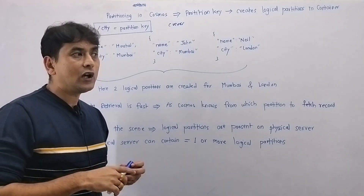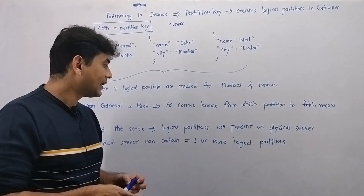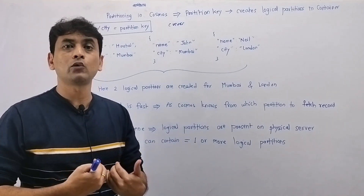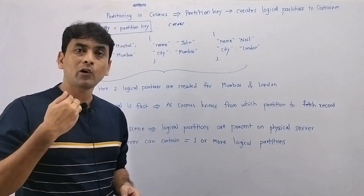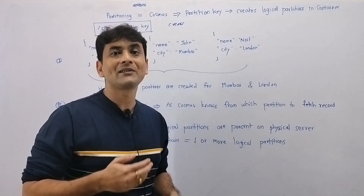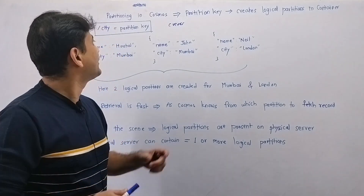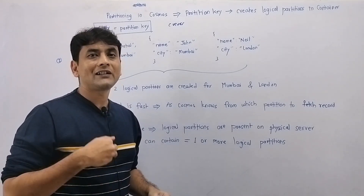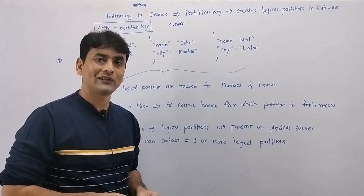Because we have physical servers behind the scenes for our logical partitions, we can horizontally scale our Azure Cosmos Database whenever we need to improve performance. When we scale horizontally, more physical servers or machines are provided to us by Azure. That's it for this video — we've covered the concept of partitioning, and in the next video we'll understand how to choose a correct partition key based on our requirement.